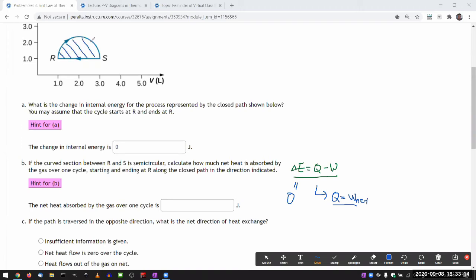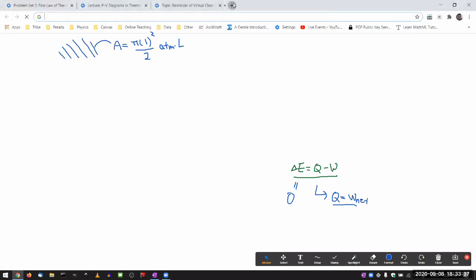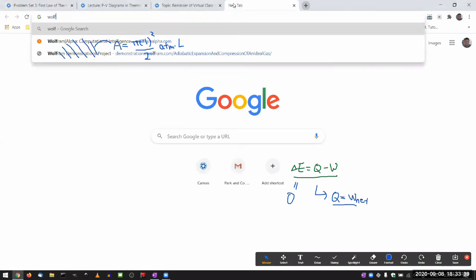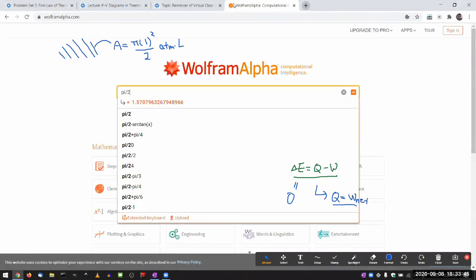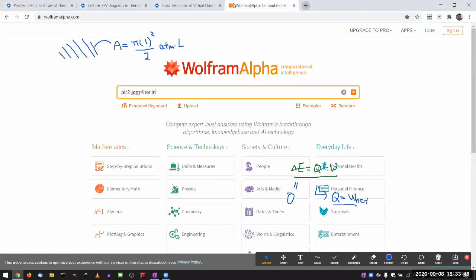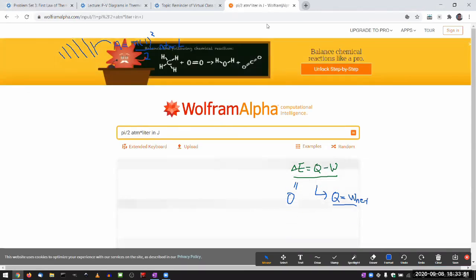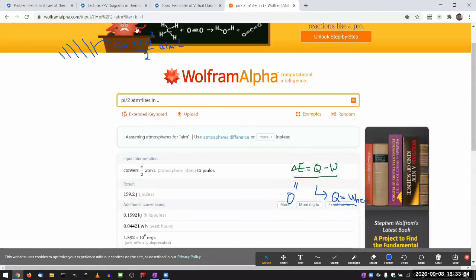It's worth recalculating. So let me just do that quick calculation again. This area here, as we've done it before, this area was given by the area of the semi-circle. Pi, the radius is one, one squared over, that's the area of circle, so half that in the units of atmosphere liter. And I did this on WolframAlpha last time. I'm going to do the same thing. Pi over 2 atmosphere liter in the unit of joules.